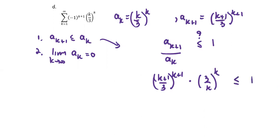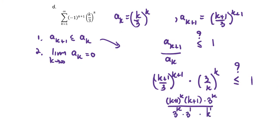We check whether this is less than or equal to 1 and consolidate the two factors to get k plus 1 over k, raised to the power k, multiplied by k plus 1, in the numerator, and 3 to the k plus 1 — which is 3 to the k times 3 — in the denominator. The 3 to the k terms cancel, leaving 1 over 3, multiplied by k plus 1 over k, raised to the power k, multiplied by k plus 1. We then ask: for which k is this expression less than or equal to 1?